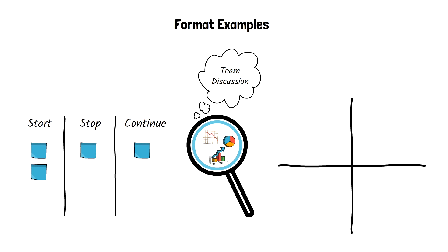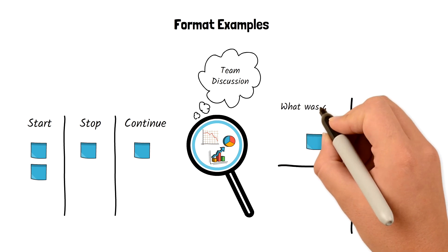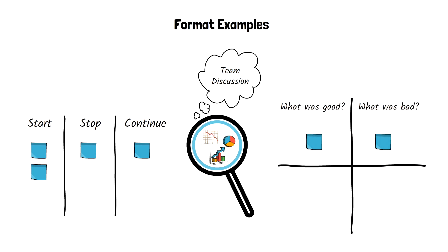The second format is having the four quadrants where the team enters sticky notes for each section: what was good, what was bad, ideas, and actions. By the end of this session, the team has a list of ideas on how to improve things. The ideas get transformed into improvement actions for the entire team.